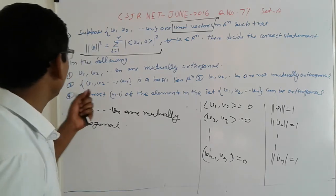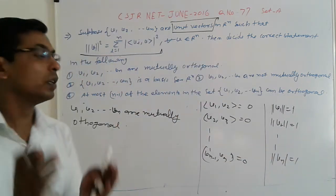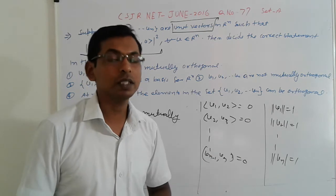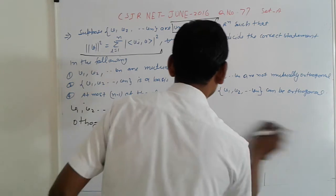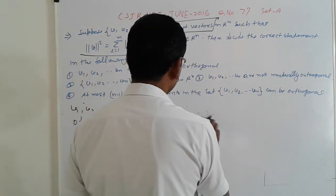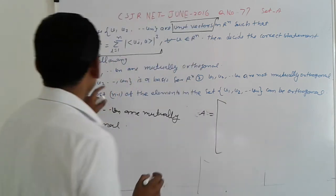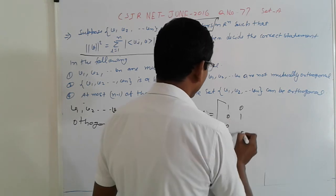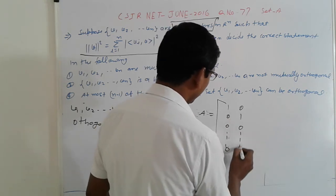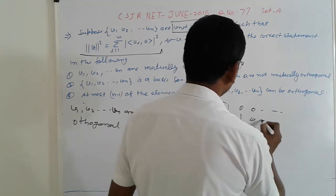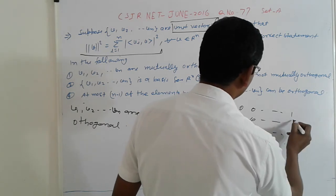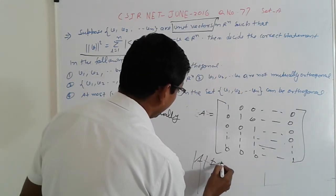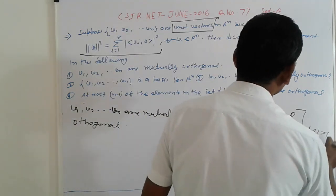Next, the question is: are V1, V2 a basis or not? To check for basis, write V1, V2 down in the form of a matrix and check if the determinant is not equal to 0. Suppose matrix A — we write the elements V1, V2 as columns: E1 as (1, 0, 0, ..., 0), E2 as (0, 1, 0, ..., 0), and so on up to En as (0, 0, ..., 1). Determinant of A is not equal to 0 — in fact determinant A is equal to 1. Simple.